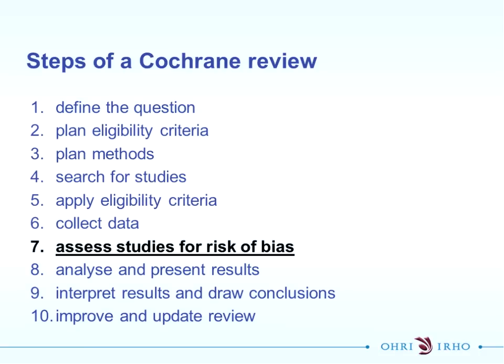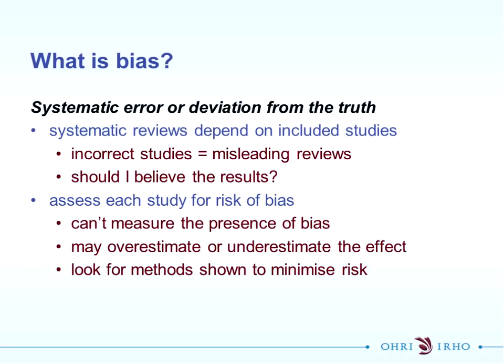Risk of bias is obviously quite important and can influence the overall findings of your review quite substantially, so it's something that should be taken quite seriously. Before we start delving into the practical example, it's really important that we think about what is bias and that we're all on the same page. Bias is a systematic error or deviation from the truth. If a number of your studies are giving inaccurate estimates of effects, this can lead to misleading results for your review.